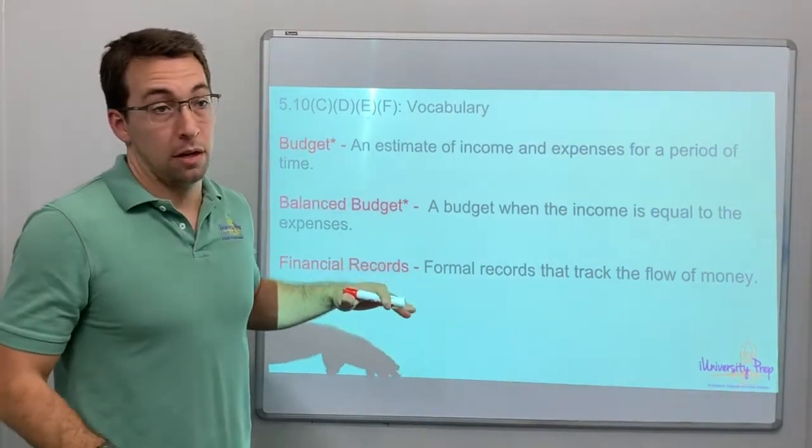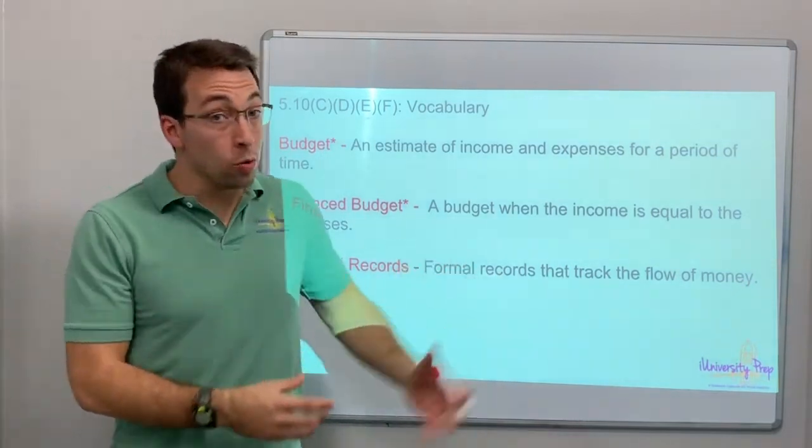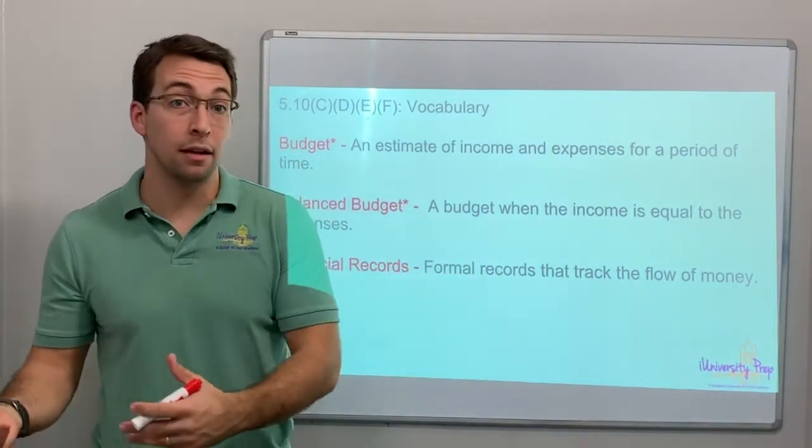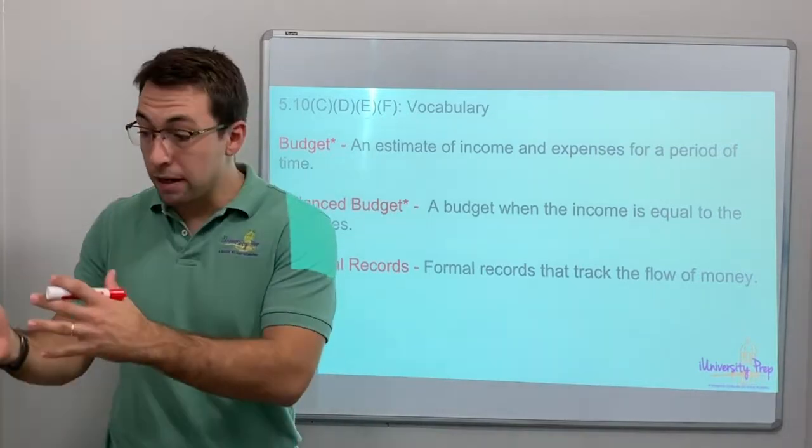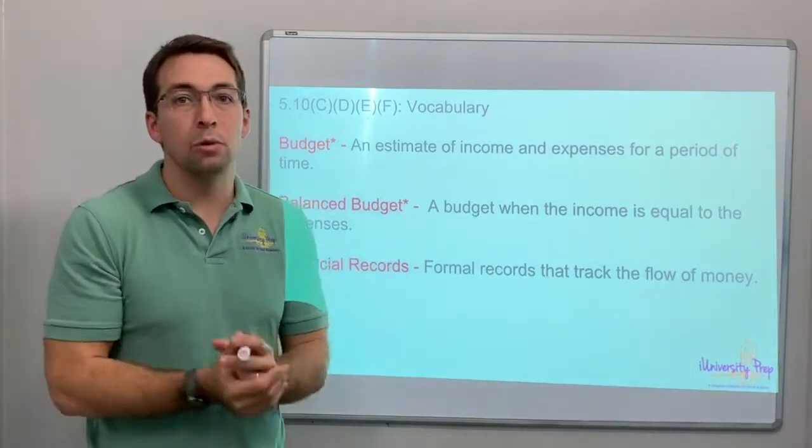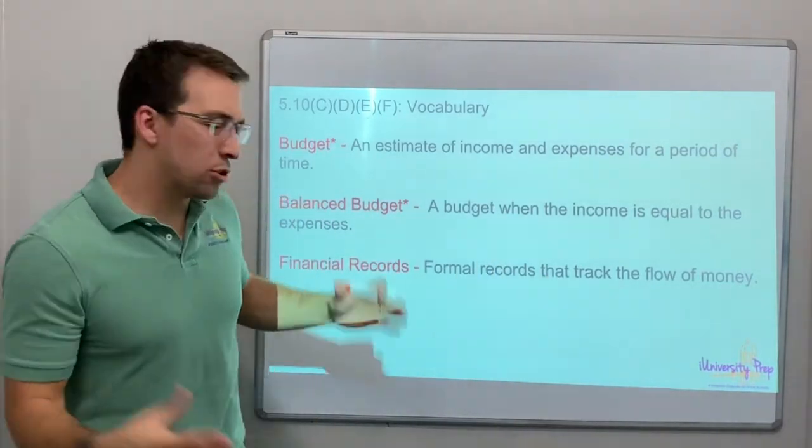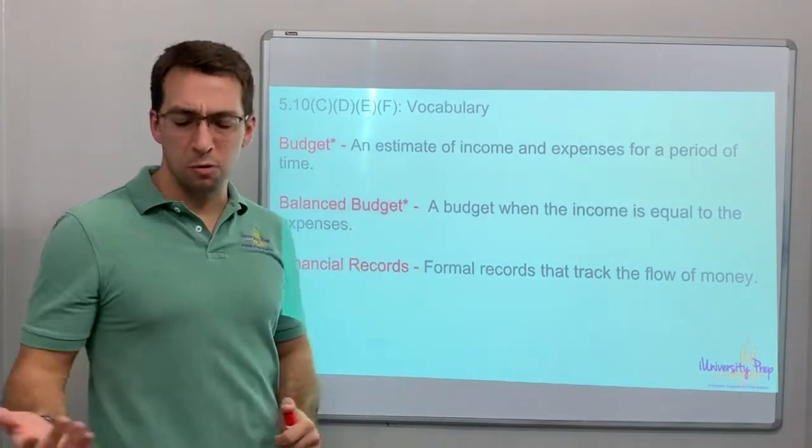Balanced budget: A balanced budget is when you don't spend more than you make. You make money and you spend it and that is balanced and it equals zero. And then financial records. Do you keep records of what you spend?